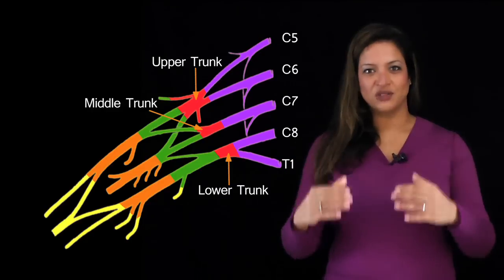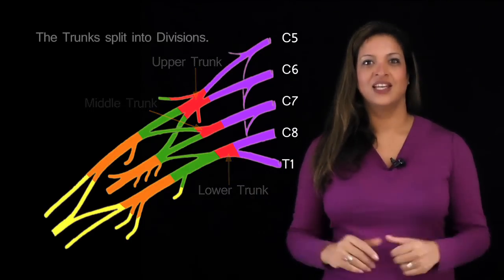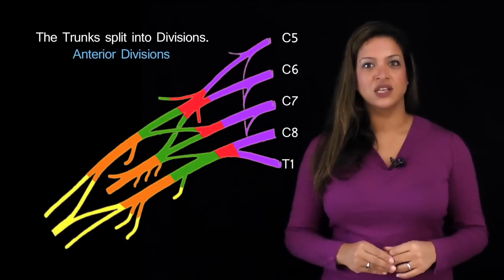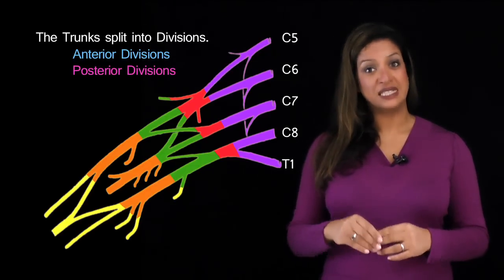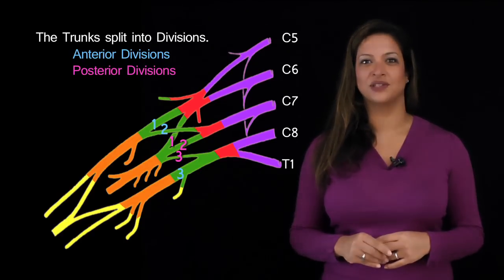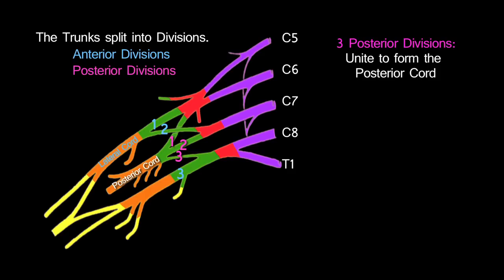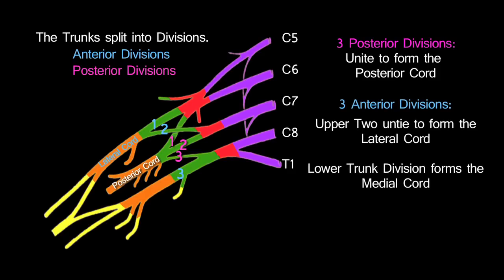As soon as the trunks are formed — upper, middle, and lower — each of them splits into anterior and posterior divisions. So there are 6 divisions: 3 anterior and 3 posterior. All of the posterior divisions unite to form the posterior cord. The upper two anterior divisions unite to form the lateral cord, and the anterior division of the lower trunk carries on alone to form the medial cord.